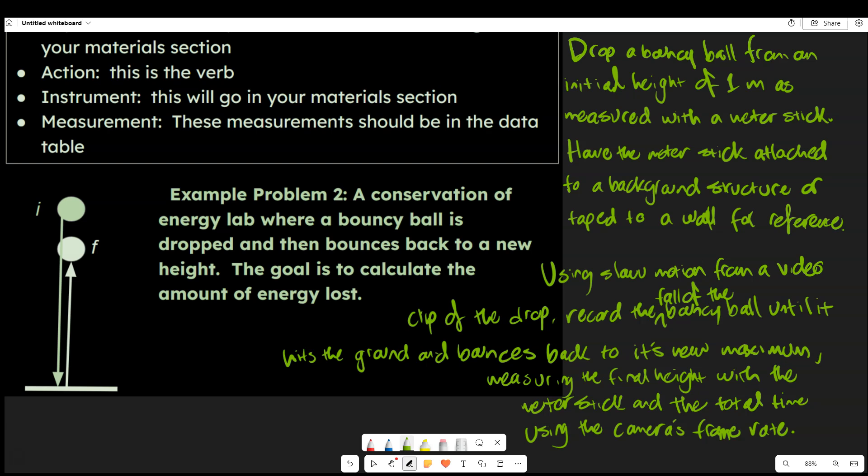Okay, and so let's take a look at this example here. So I wrote drop a bouncy ball from an initial height of one meter as measured with a meter stick. Have the meter stick attached to a background structure or taped to a wall for reference. Using slow motion from a video clip of the drop, record the fall of the bouncy ball until it hits the ground and bounces back to its new maximum, measuring the final heights with the meter stick and the total time using the camera's frame rate.